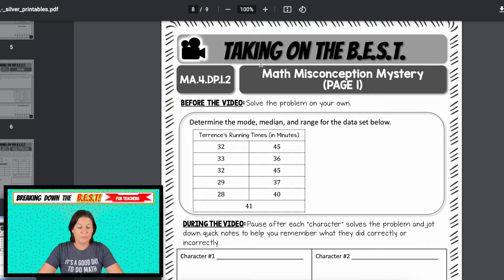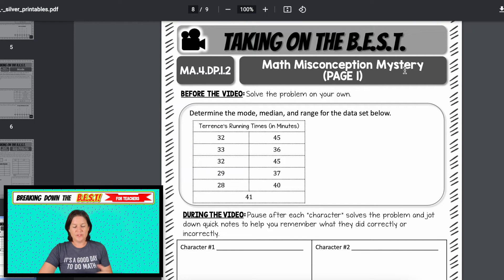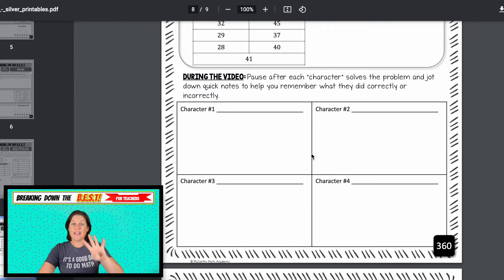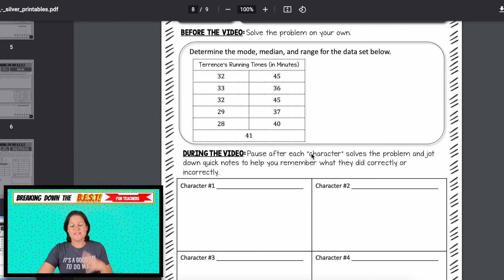Finally, for the silver plan, we have the video right here for math misconception mystery. Just click play for the video. I will walk you through the entire process. First I'll explain that students will solve this problem on their own. This problem says to determine the mode, the median and the range for the data set below. Students can work independently or with a buddy. And then they will press play as they watch four characters in the video solve the same problem. These four characters are just me dressed up in silly costumes with silly accents.